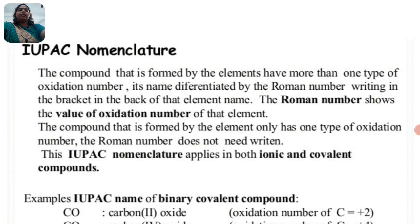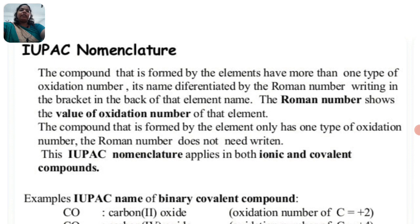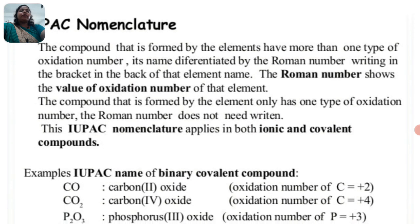In nomenclature, the compound formed by an element that has more than one type of oxidation number is named differently — the Roman number is written in brackets after the element name. The Roman number shows the value of the oxidation number of that element. We show in brackets those elements whose oxidation state is more than one type.